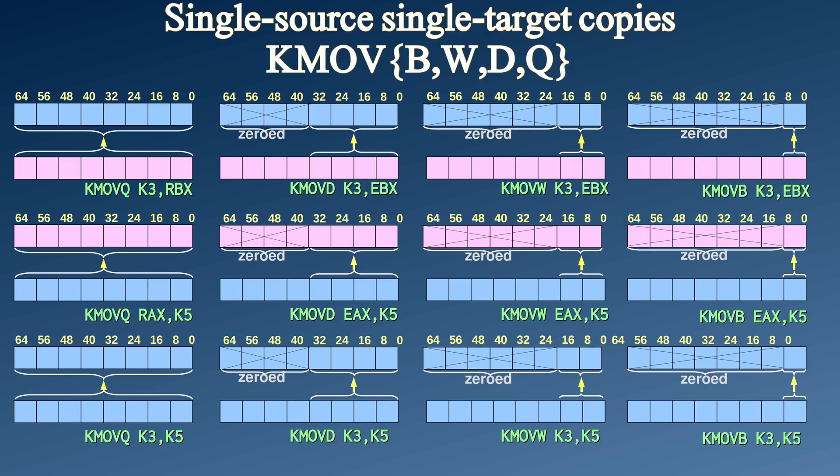That is until AVX-512 came along with its op-mask registers. You would still use MOVQ and MOVD, but now you would have to add K to the beginning of the instruction name to indicate that you are operating with op-mask registers — as if that wasn't already clear from the parameters. You can only use these instructions with op-mask registers.